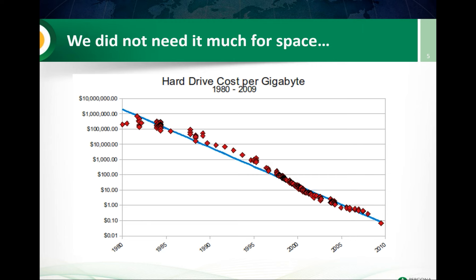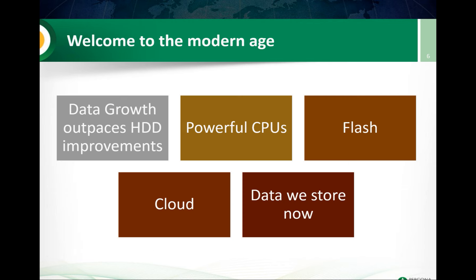With hard drive capacity growing so quickly, why did you need compression? Now, in the modern age, a few other things have happened. First, data growth really outpaces hard drive improvements in terms of capacity. Whatever we call it — Moore's Law or something else for hard drives — we can see it has been running out of steam. For the last few years, we're not really getting hard drives which are much larger; we go from maybe 3 terabytes to 10 terabytes tops, which is by far a slower improvement level than ever before.